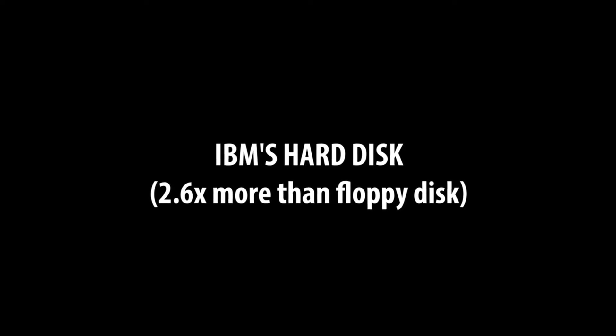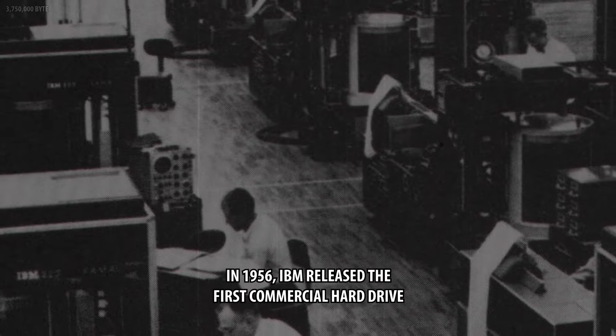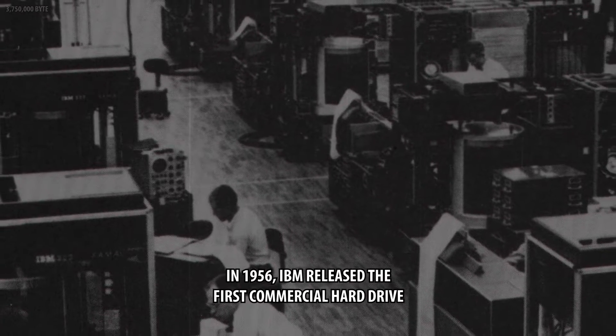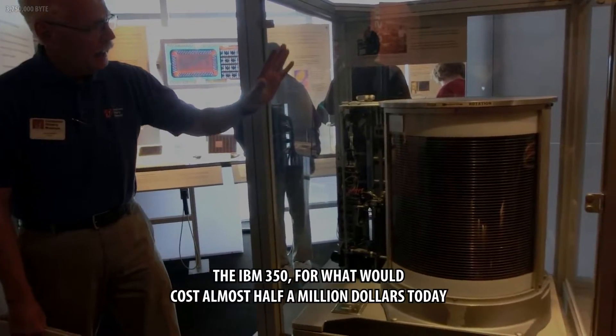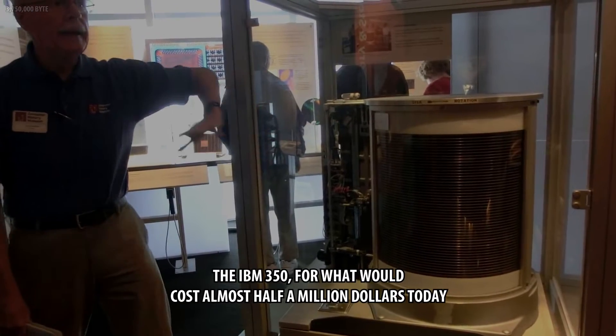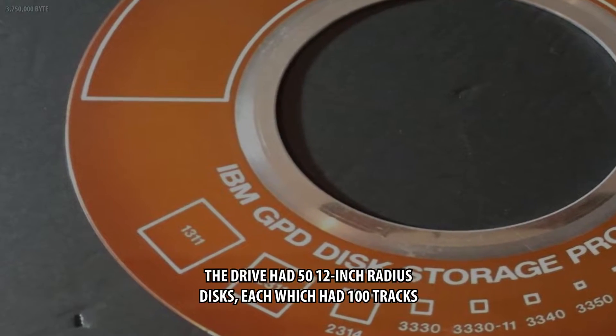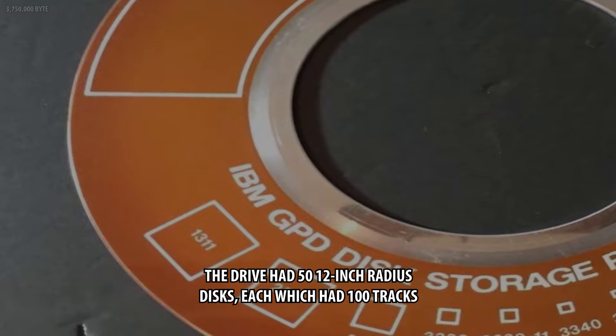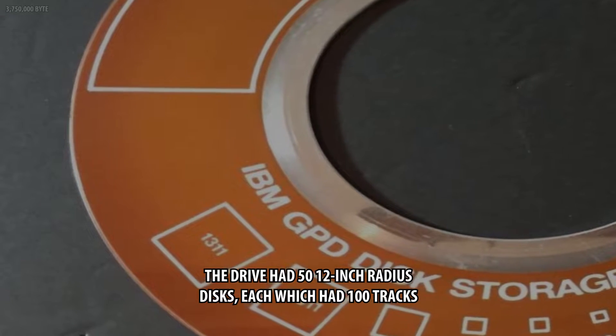IBM's hard disk, 2.6 times more than floppy disk. In 1956, IBM released the first commercial hard drive, the IBM 350, for what it would cost almost half a million dollars today. The drive had 50 12-inch radius disks, each which had 100 tracks.